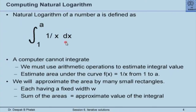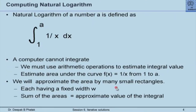Of course, we note that the natural logarithm is defined only for values greater than 0. A computer cannot integrate, and therefore we must use arithmetic operations to calculate and estimate the value of the integral. We will estimate the area under the curve f(x) = 1/x from 1 to a. As we saw in our previous explanation, we will approximate the area by many small rectangles. Each rectangle has the same fixed width — let us call that width w. The sum of the areas of all these rectangles is therefore the approximate value of the integral.